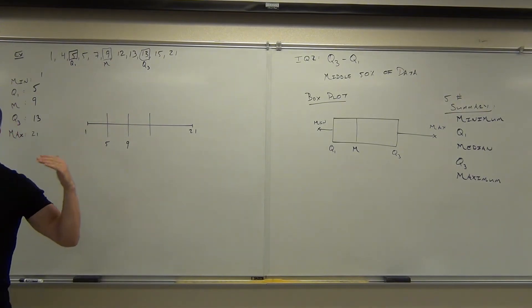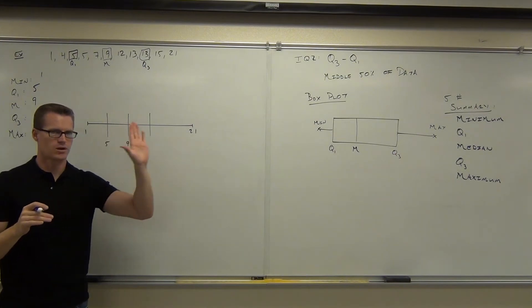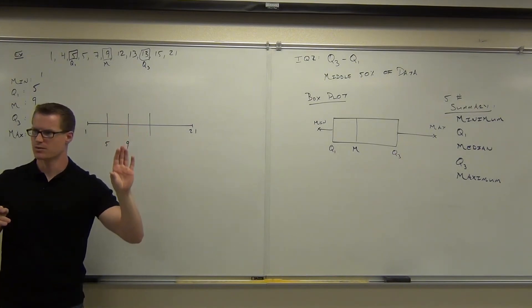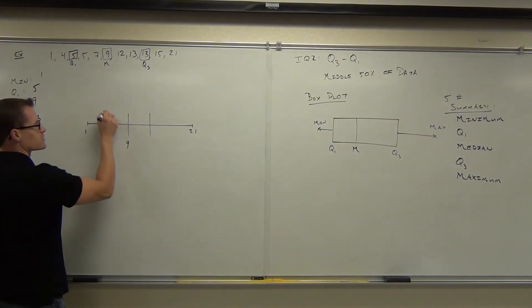So draw your whole line first, bottom to top, minimum to maximum, then scale it out. Put things where they're appropriate, where they're relative to. Are you with me on this? After that, you're almost done. You just make the box around it.